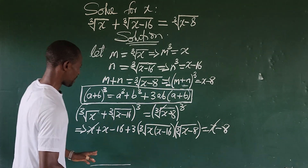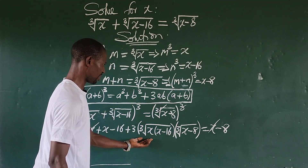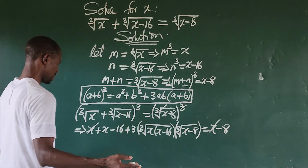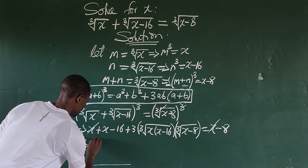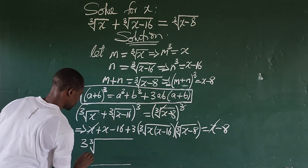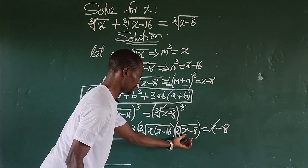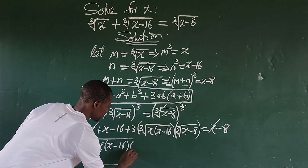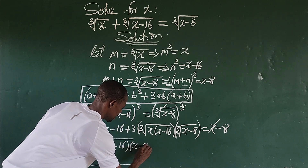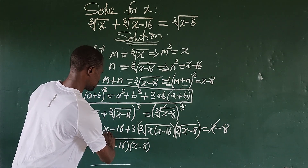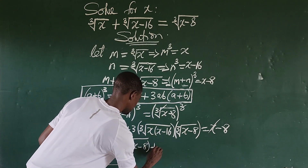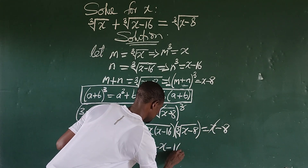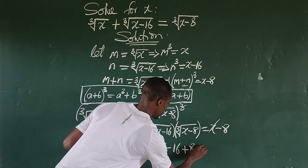The x terms on both sides cancel out. Moving the remaining terms, we get: 3 times the cube root of x(x minus 16) times (x minus 8), plus x, minus 8, equals zero. To eliminate the radical, we move the radical term to one side of the equation.